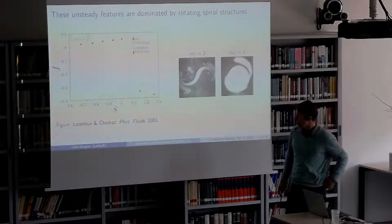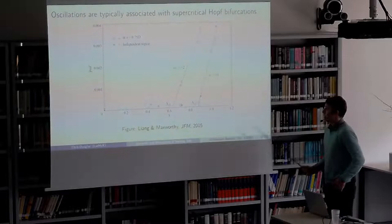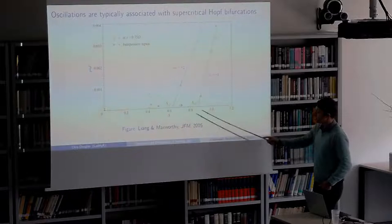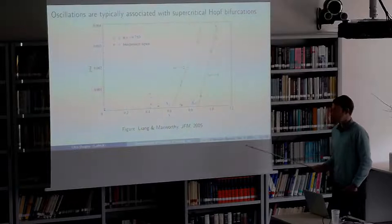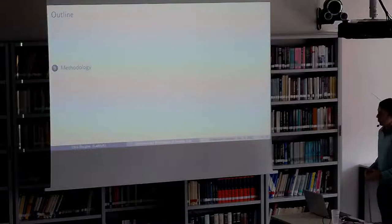There is a distinct interval of swirl where each of these modes appears. This m equals two to m equals one transition is pretty repeatable, and Liang and Maxworthy classified the amplitudes of these phases of power spectral density and concluded that both the m equals one and m equals two instability were supercritical bifurcations. However, we're going to look at some results which suggest that's not always the case. With that, I'll move on to the methodology I'm going to use to study this system.